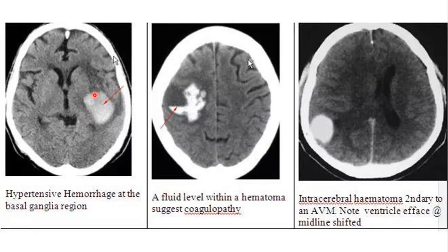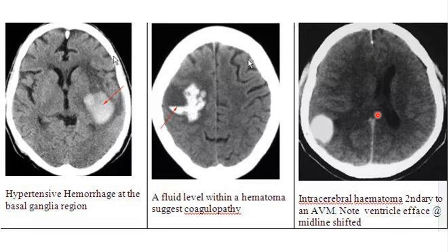Other types of intraparenchymal hematoma may not be at the basal ganglia — for example, at the deeper part of the left parietal lobe, with the thalamus and basal ganglia intact. Another hematoma in the right parietal lobe shows a hematocrit level — a fluid-blood level — indicating this is not a very fresh hematoma. The RBCs have sedimented at the base. Another intracerebral hematoma is secondary to arteriovenous malformation, not hypertension, with compression of the right lateral ventricle and midline shift.